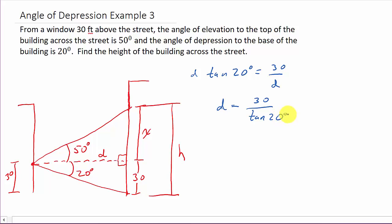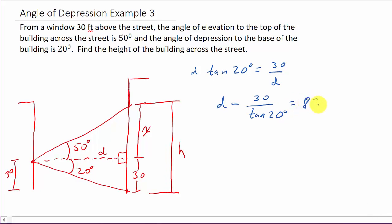And so, now, punch that in your calculator. So, 30 divided by tangent 20. Make sure your calculator is in degrees. That's 82.42432258. So, what I'll do just for the video, I'll round it to one decimal place.